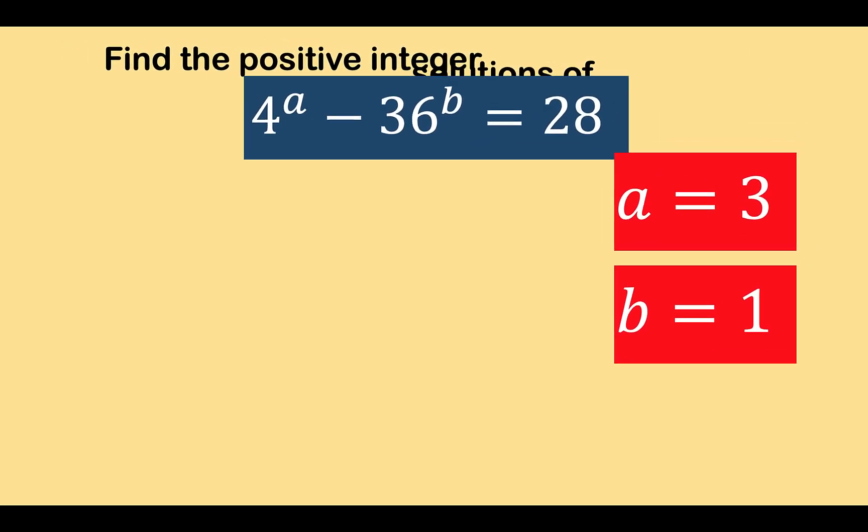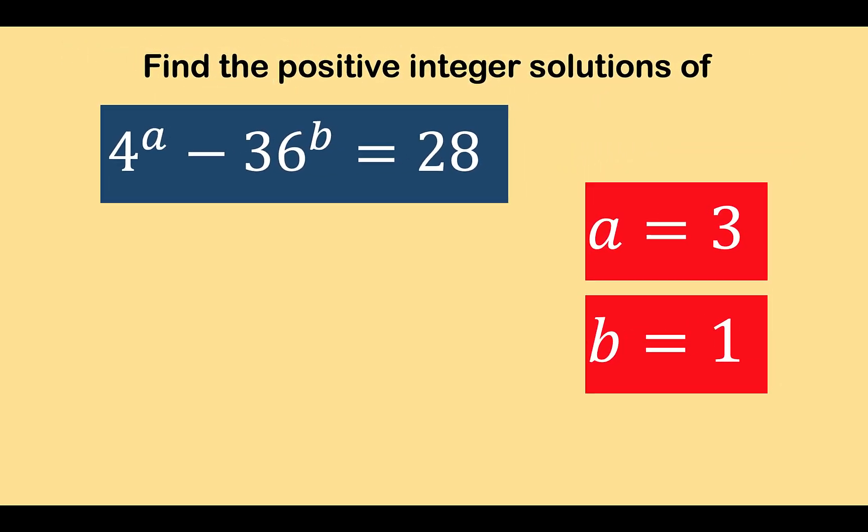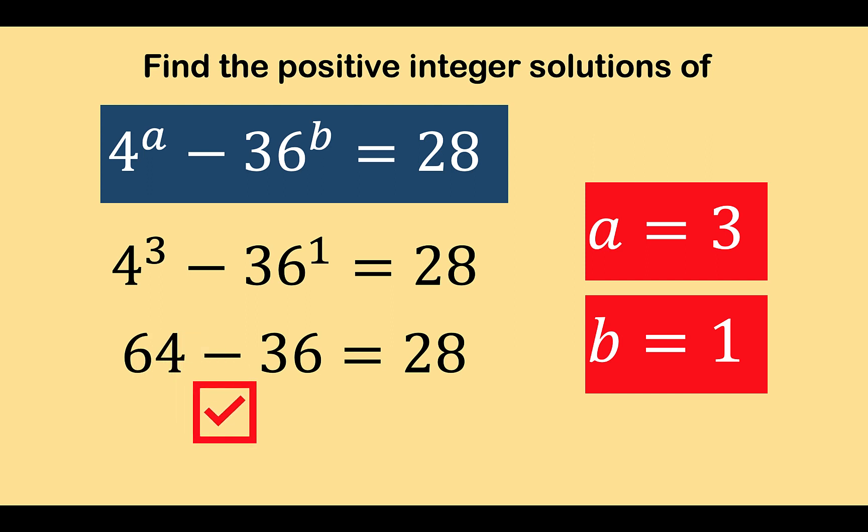And let's check if our answer is correct. Substituting the results for a and b to the original equation, we now arrive at 64 minus 36 equals 28, which is indeed a correct equation. So our final answers are a equals 3 and b equals 1, and both are positive integer solutions to this given Diophantine equation. Thank you very much, and we hope to see you again in our next video.